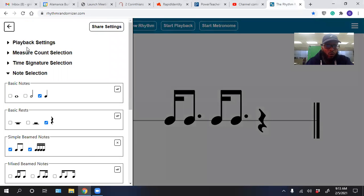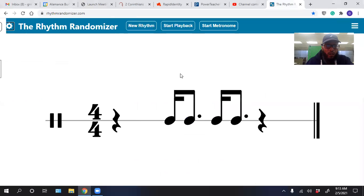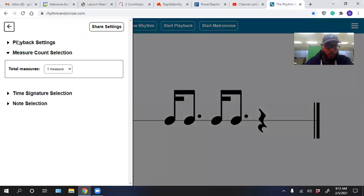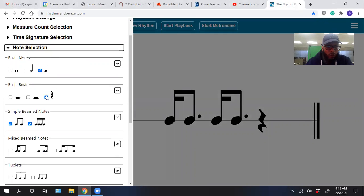and then you click in the corner and make sure you do only one measure. Then after you do that, you want to make sure we have note selection. We want to have the quarter note, the whole note, the rest, the eighth note, apple and pepperoni.